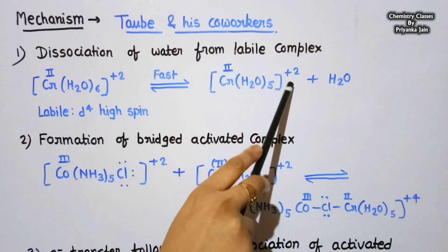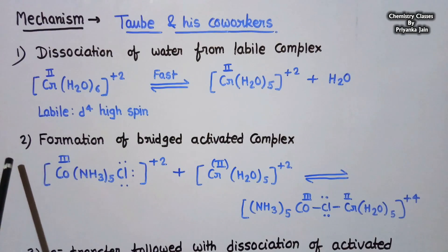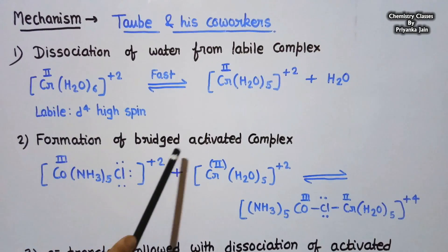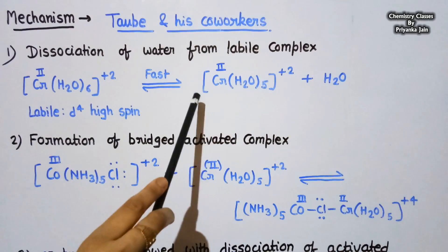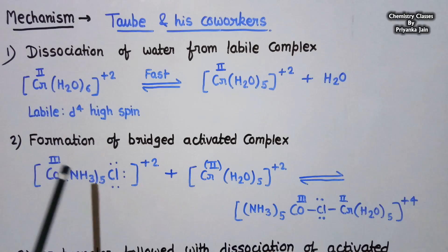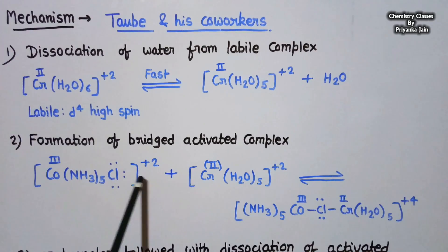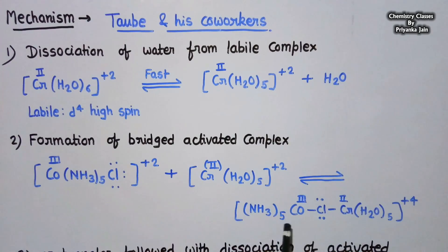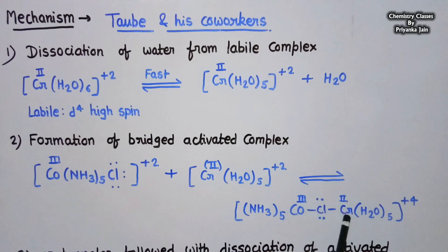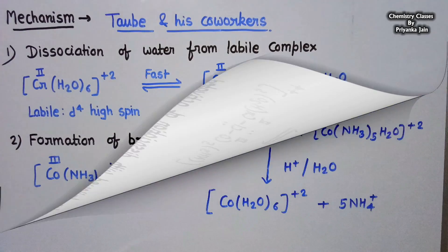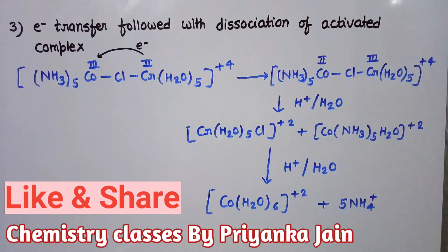In the second step, formation of the bridged activated complex takes place. The [Cr(H2O)5]²⁺ complex reacts with the pentaamine cobalt complex [Co(NH3)5Cl]²⁺ to form an activated complex in which the chlorine is present between the cobalt and chromium metals, acting as a bridge between them.